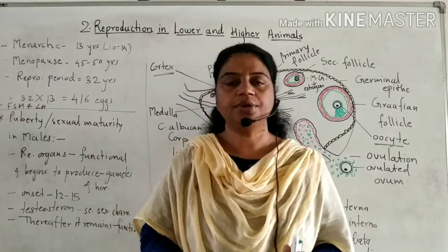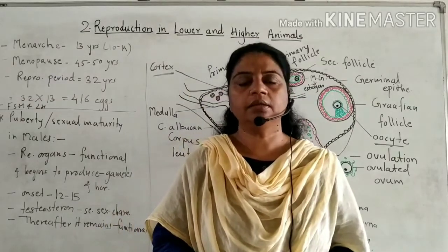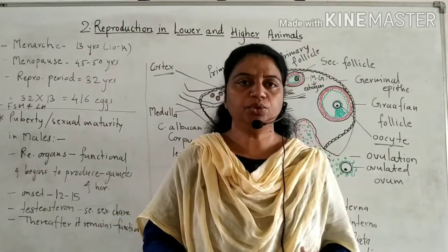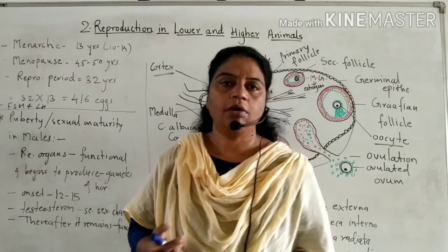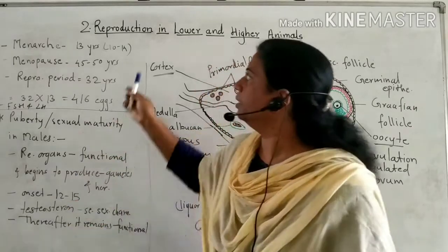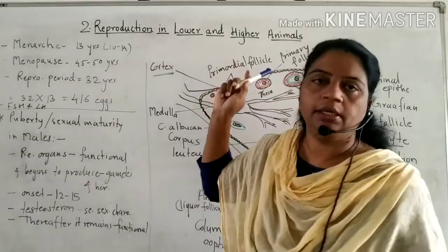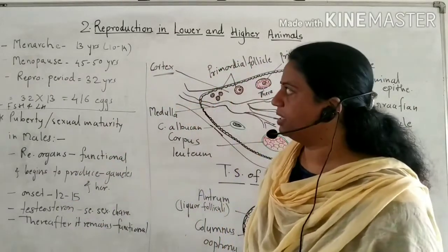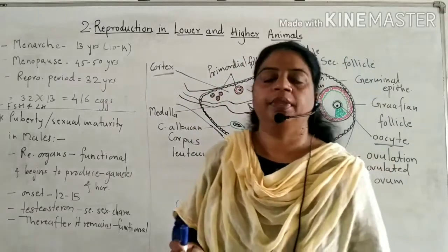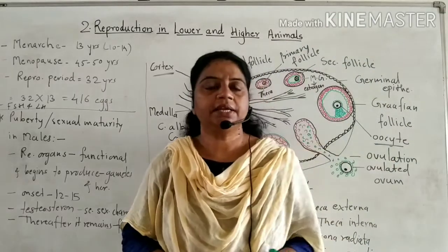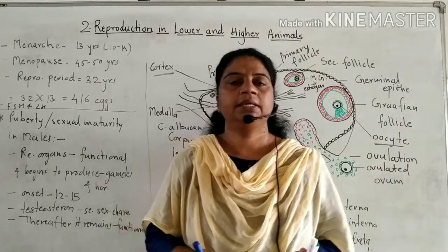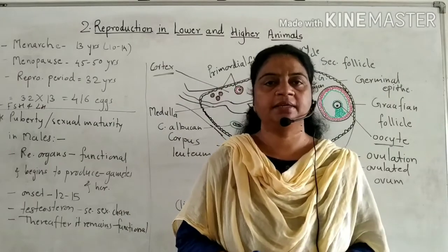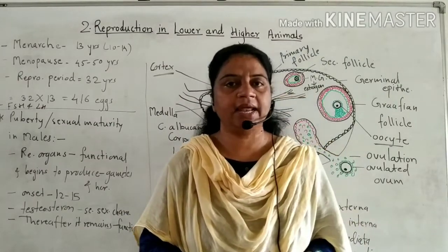Hello students, here we will start a new topic of the second chapter: reproduction in lower and higher animals. In the last lecture, we have seen the structure of breast and accessory glands.